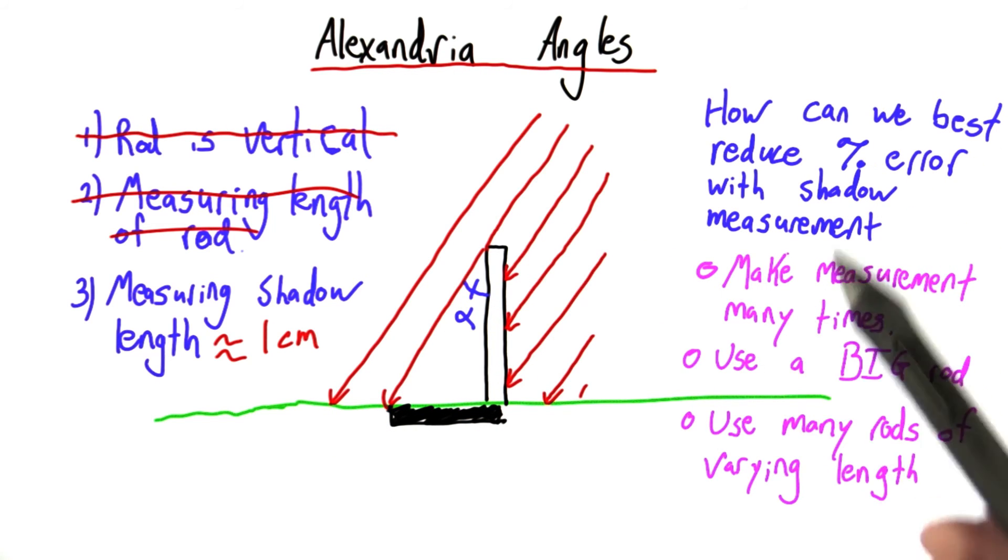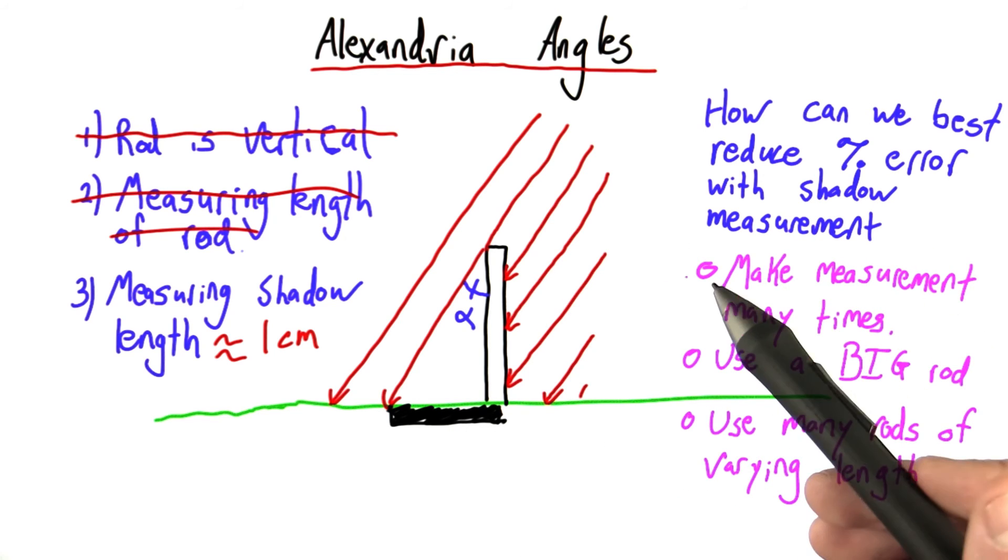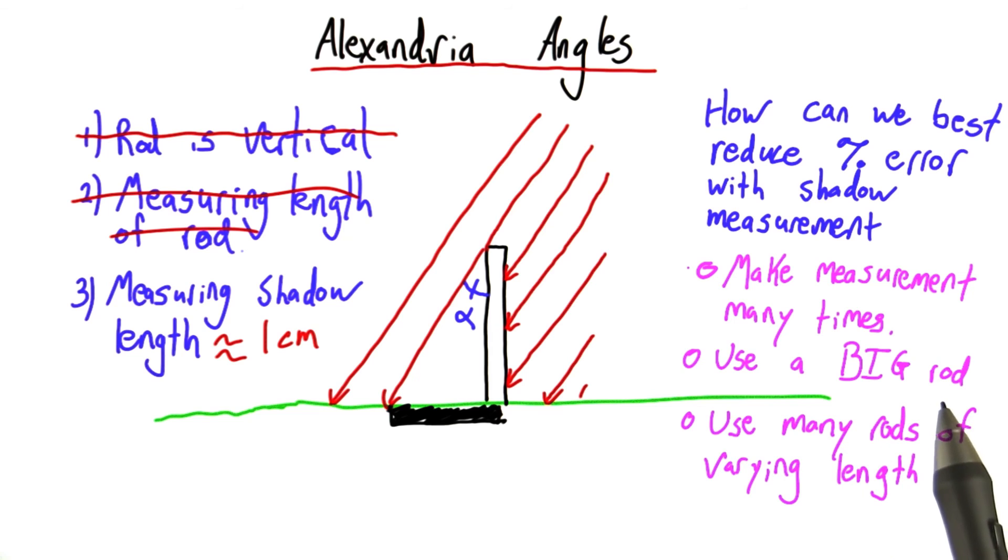I want to know, how can we best reduce the percentage error with the measurement of the shadow? Should we make the measurement many times? Should we use a really, really big rod? Or should we use many rods of varying length? Which of these would best reduce the percent error?